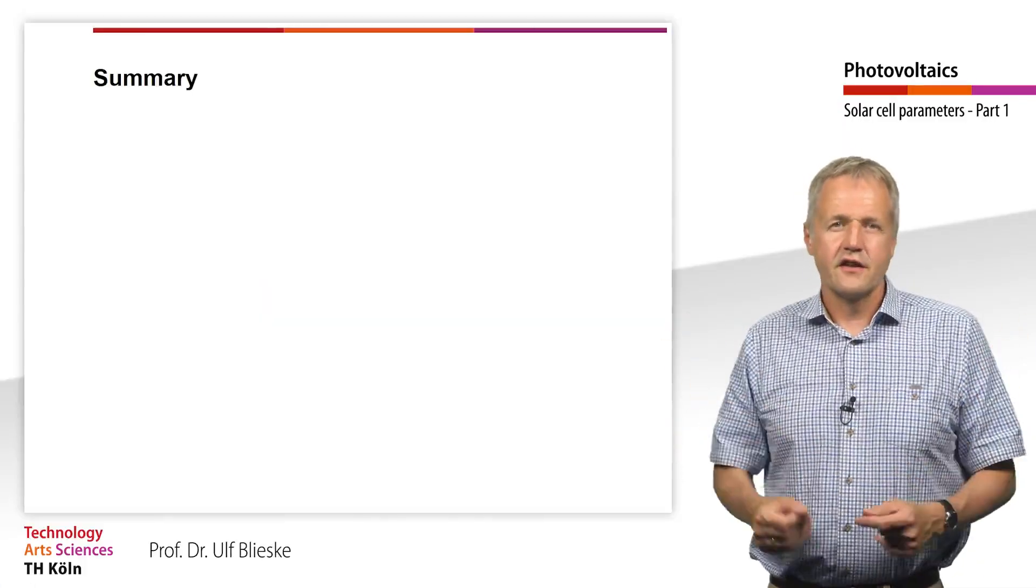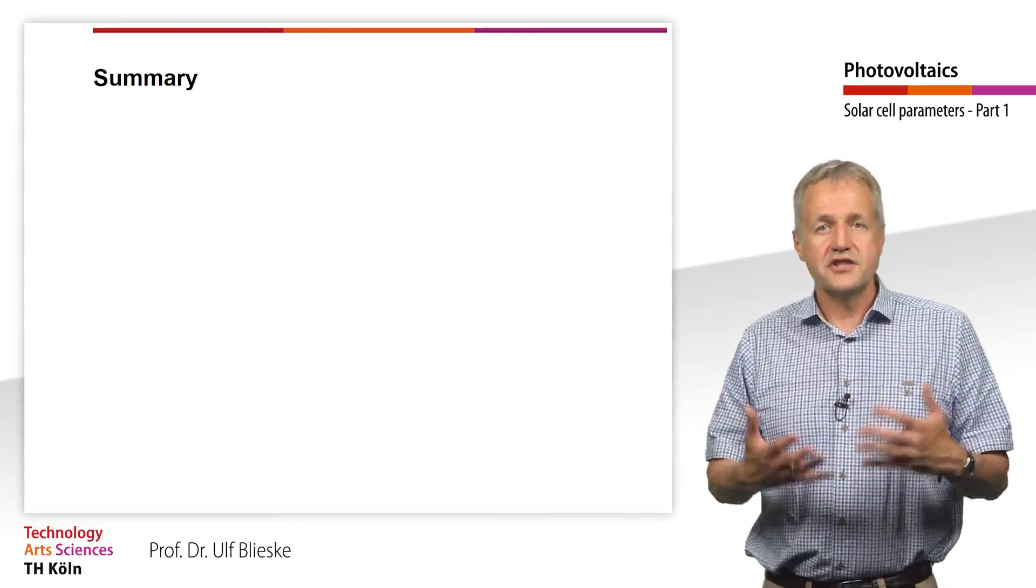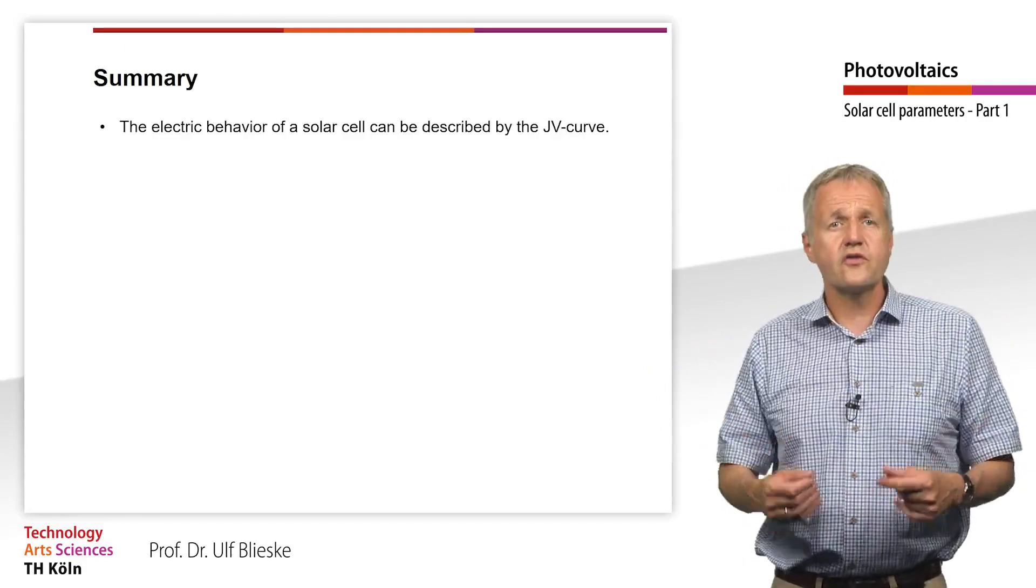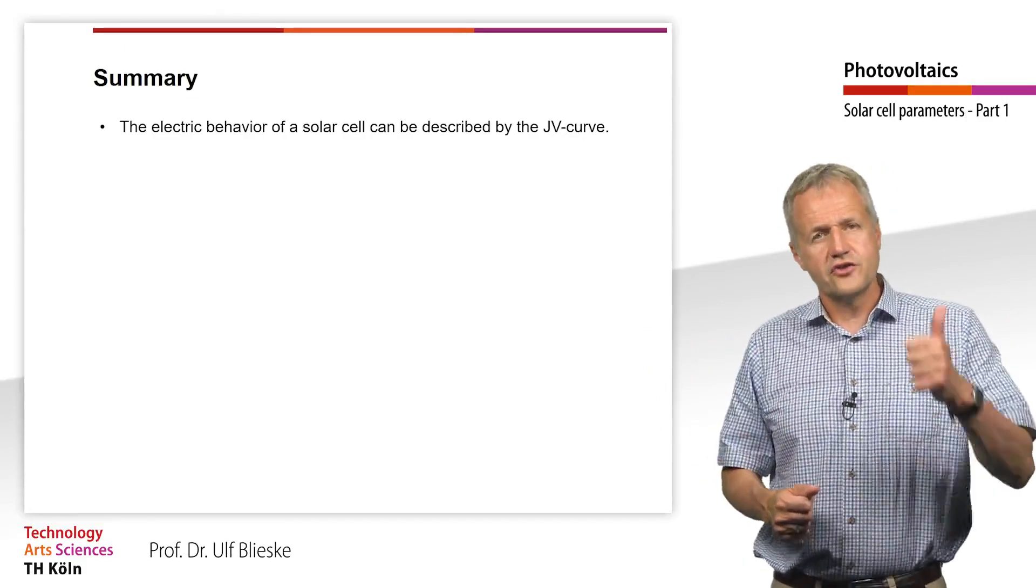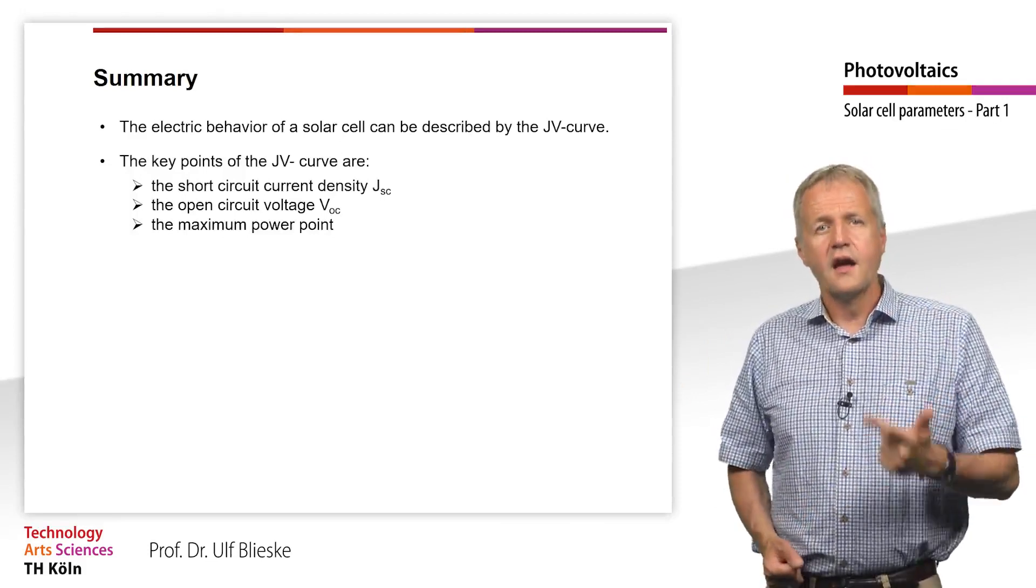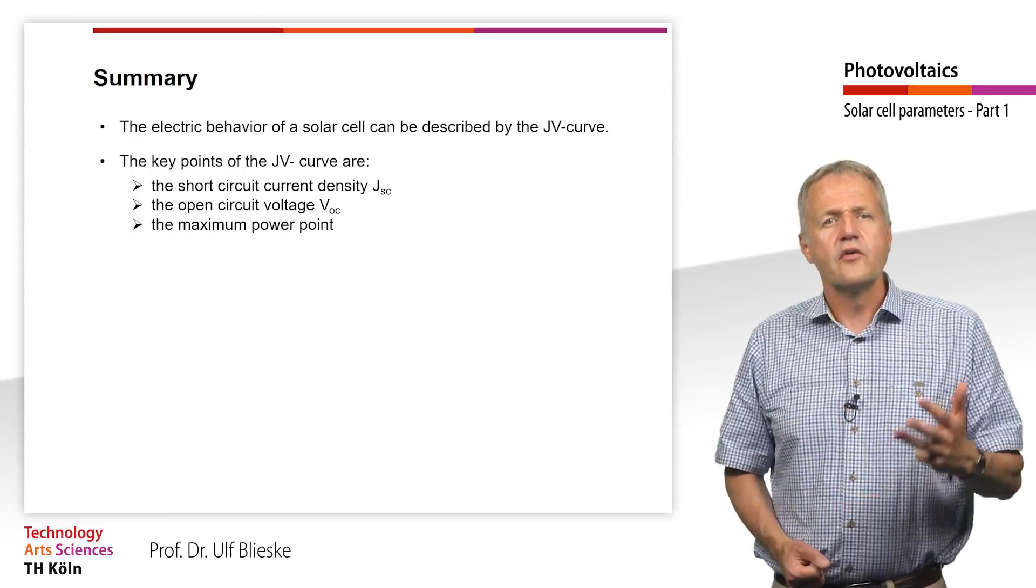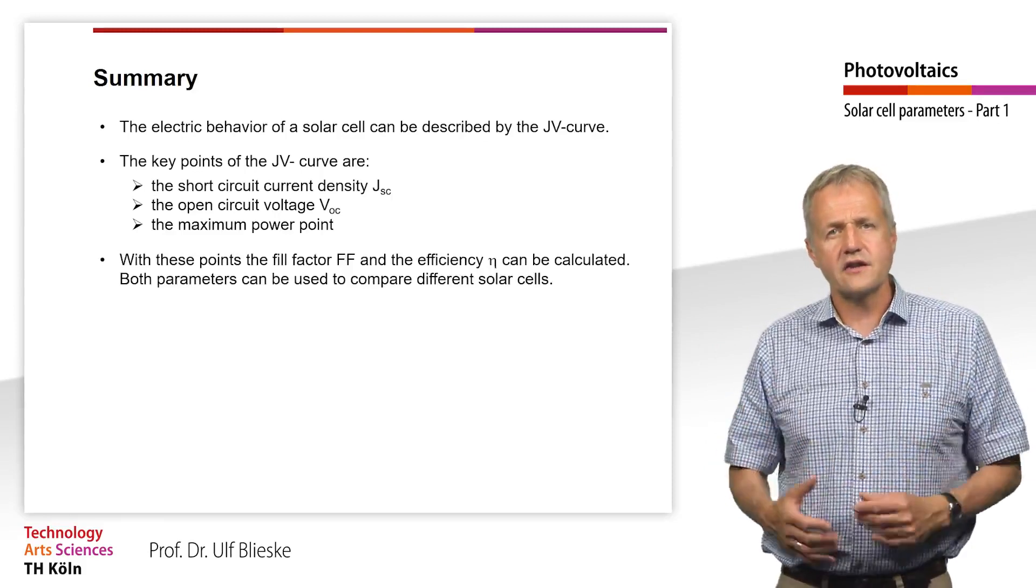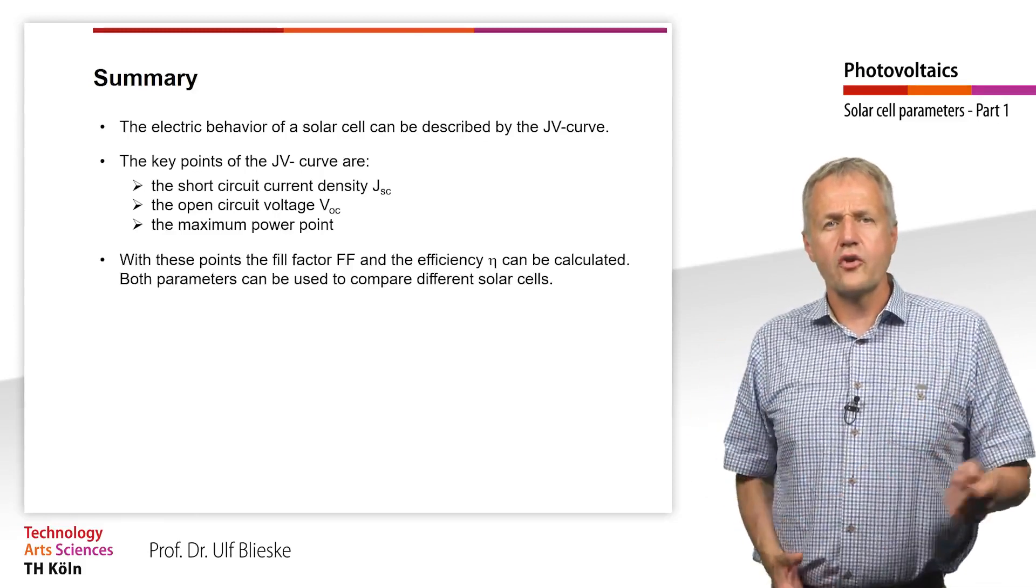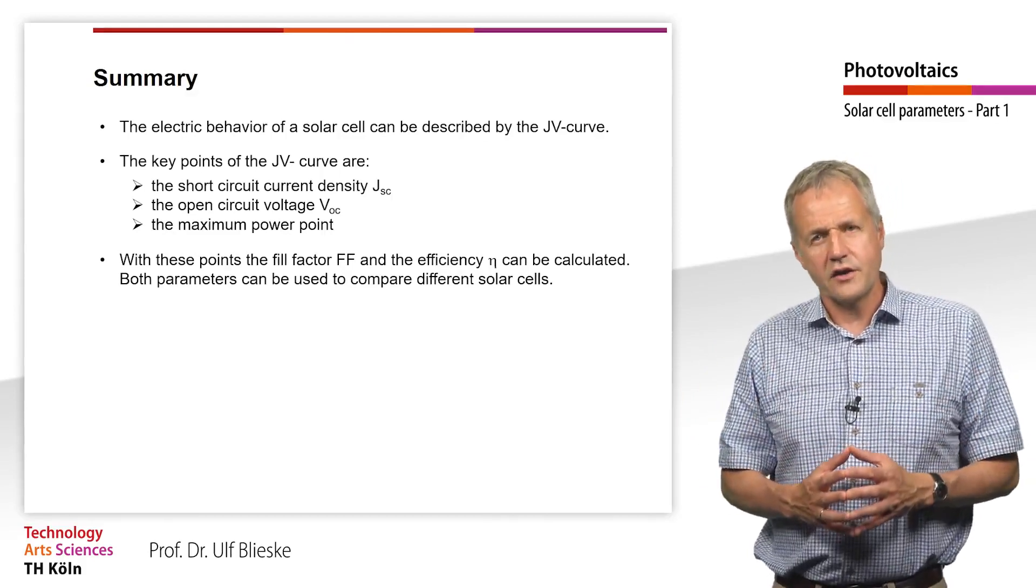We summarize. We can describe the electrical behavior of a solar cell using a J-V curve. From the J-V curve, we can determine three main points: the short circuit current density JSC, the open circuit voltage VOC, and the maximum power point MPP. With these three points, we can calculate the fill factor and the efficiency of a solar cell. Both values allow us to compare the quality of different solar cells and are well-recognized rating instruments.